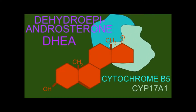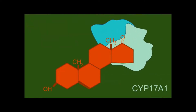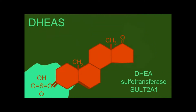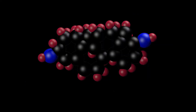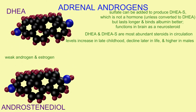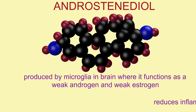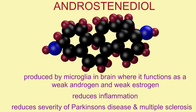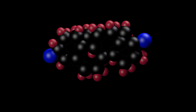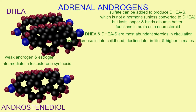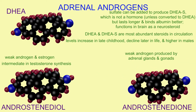Levels increase in late childhood, decline later in life, and in general are higher in males than in females. From DHEA, a number of other adrenal androgens are made, such as androstenedione, which is both a weak androgen and weak estrogen, binding both androgen and estrogen receptors and serving as an intermediate in testosterone synthesis. Androstenedione is a weak androgen produced by both adrenal glands and the gonads.